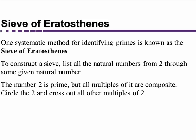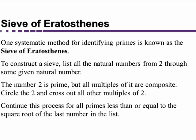So we're going to skip count by 2s, cross them all off, and then look at the next number that's not circled or crossed off, which would be 3. We continue this process for all primes less than or equal to the square root of the last number on the list. So for example, if we're going up to 50, the square root of 50 is about 7, a little more than 7.